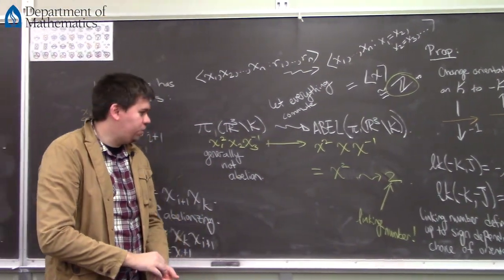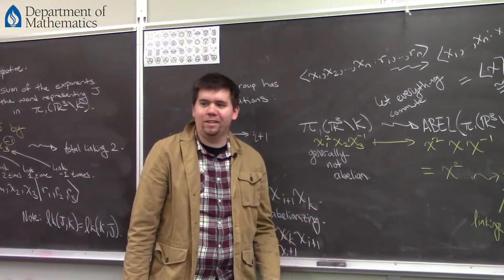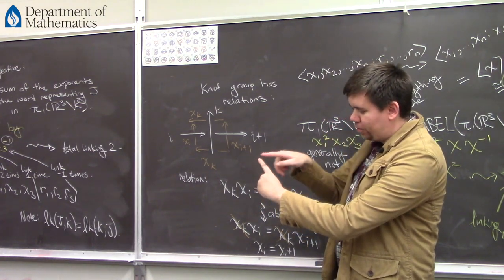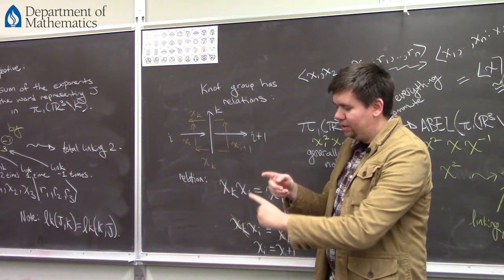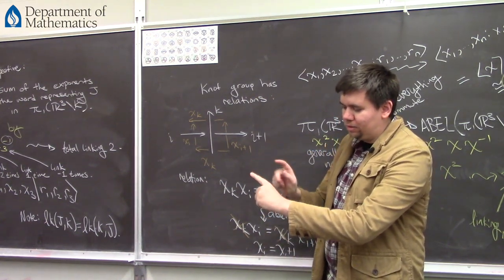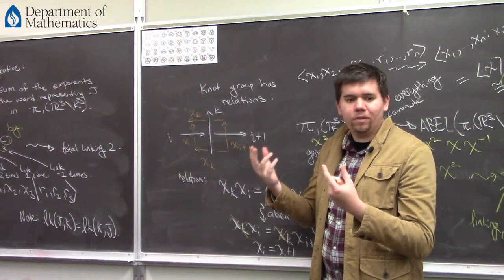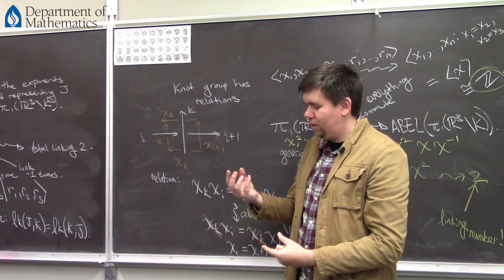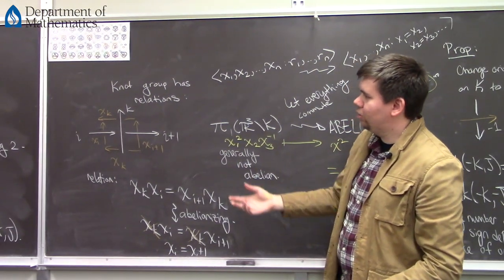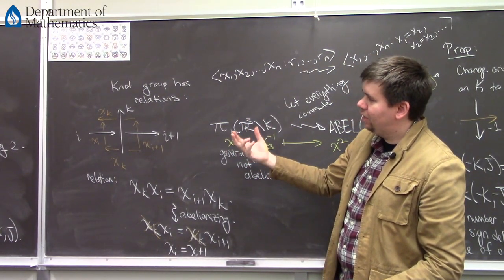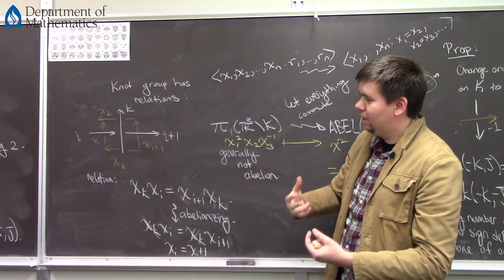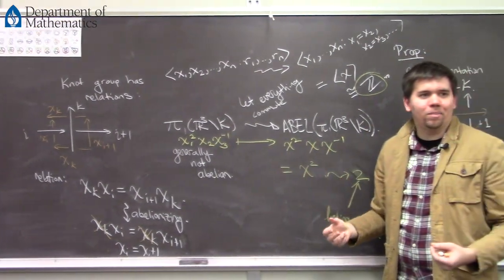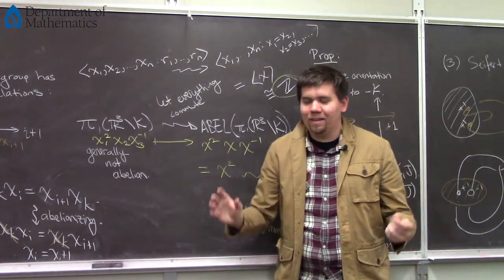So that's the group theory perspective on what linking number is. We've seen four perspectives so far: the first combinatorial one where you count the number of times one component passes over the other; the second where you count all crossings over and under and divide by two; the third using Seifert surfaces; and the fourth — this group theory perspective — where you look at one component as a word in the fundamental group of the complement of the other. I'm going to give you a fifth perspective now, due to Gauss.